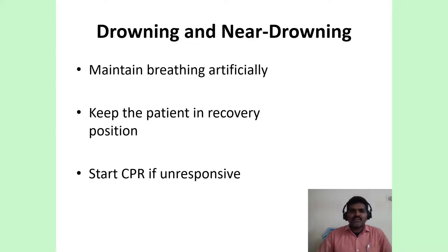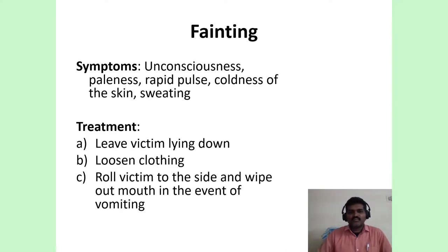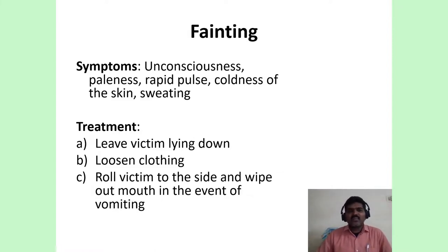For drowning and near drowning, maintain breathing artificially, keep the patient in recovery position, and start CPR if the patient is unresponsive. For fainting, which is very common, symptoms include sudden loss of consciousness, pale appearance, rapid pulse, cold skin especially at the peripheries, and the patient may be sweating. Treatment includes leaving the victim lying down on the floor — do not try to make him sit or stand immediately. Loosen any tight clothes, roll the victim to the side, and wipe out any secretions from the mouth in the event of vomiting.